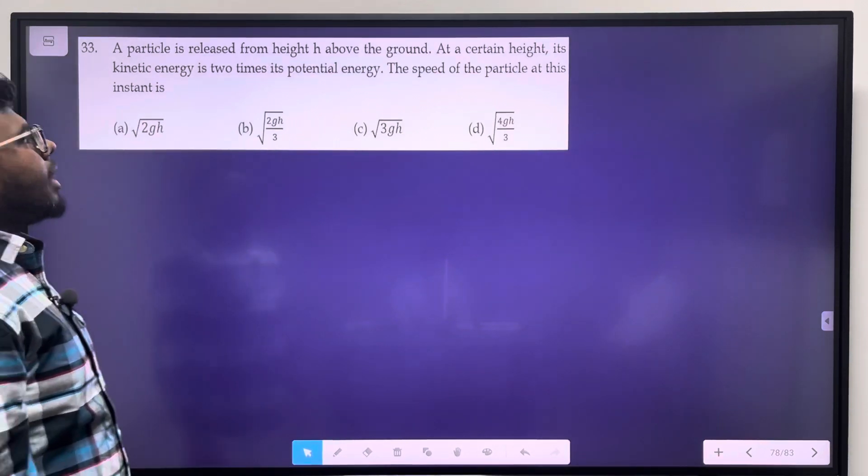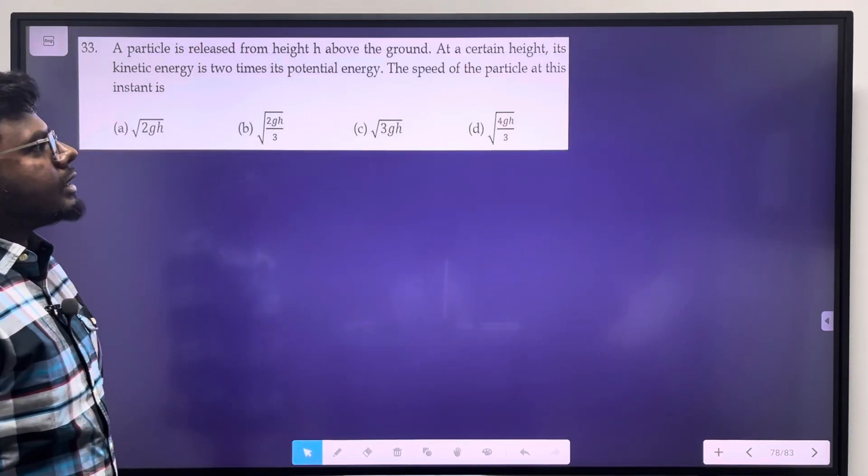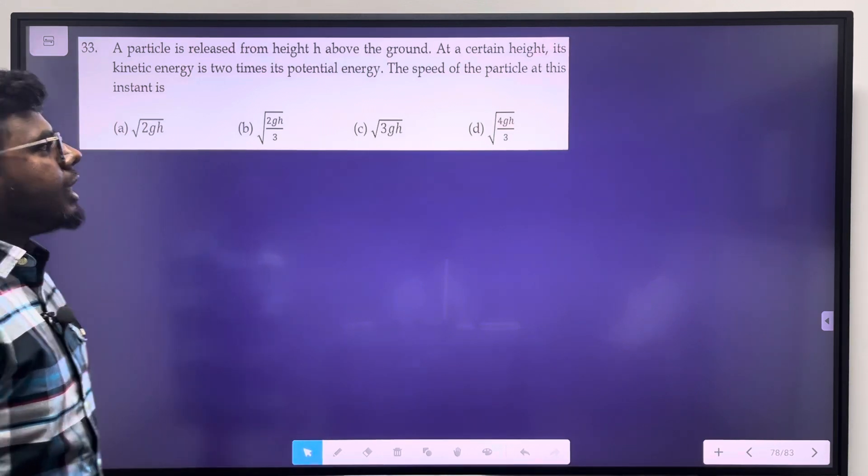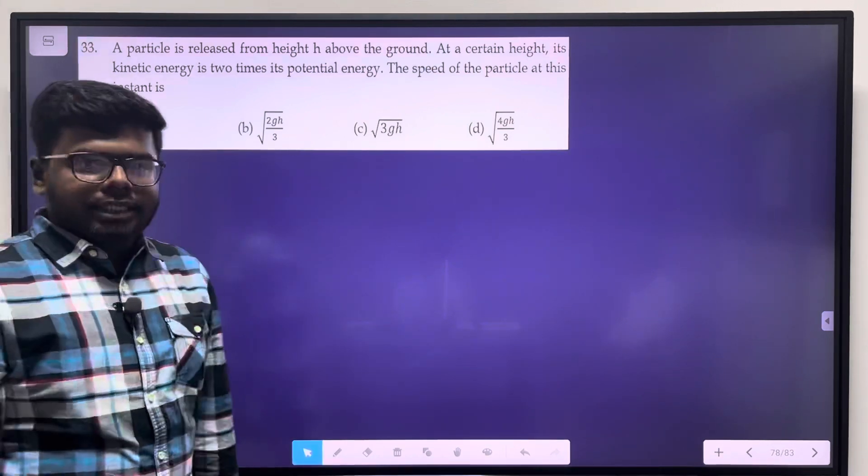A particle is released from height h above the ground. At a certain height, its kinetic energy is 2 times its potential energy. Speed of the particle at this instant is.